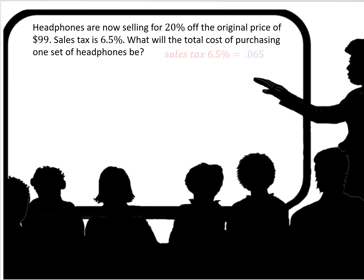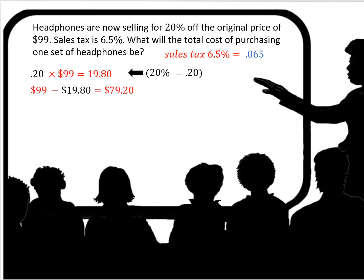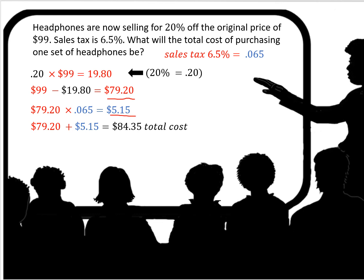Headphones are now selling for 20% off the original price of $99. The sales tax is 6.5%. What will the total cost be? Convert the sales tax of 6.5% to a decimal: 0.065, and 20% is 0.20. First, take 20% of $99 to get the discount amount, then subtract that from the original price — the sale price is $79.20. Now apply the 6.5% sales tax on $79.20 and you get $5.15 in tax. Add the sales tax to the sale price and you get a total cost of $84.35.